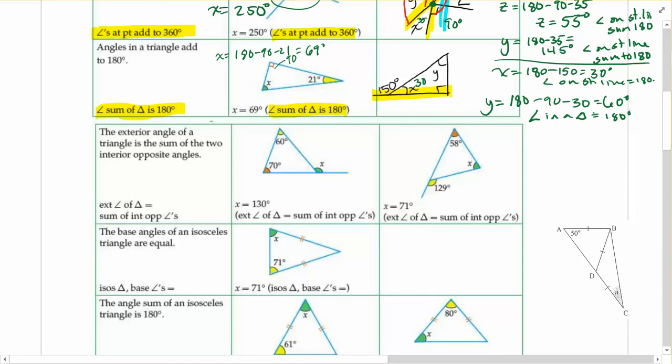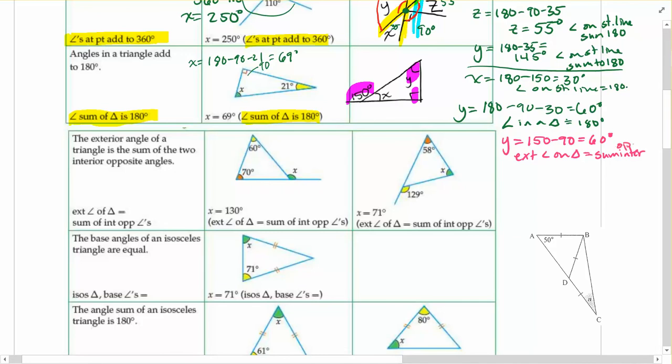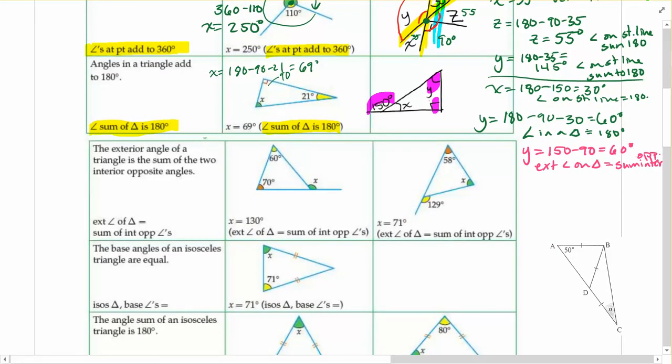There's another rule that you could use here on this particular one if you wanted. If I have this angle out here, it is going to be equal to the sum of the two opposite interior angles. That's another way to look at this. We could say that y is equal to 150 minus 90 is equal to 60 degrees, exterior angle on triangle equal to sum interior opposite interior angles. It does exist if you do want to use it.